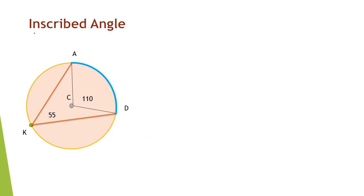Inscribed angle. Suppose we have an arc AD. This is our central angle. And this is an inscribed angle for arc AD. An inscribed angle has a vertex on the circumference. Where the two chords intersect, we have an inscribed angle.